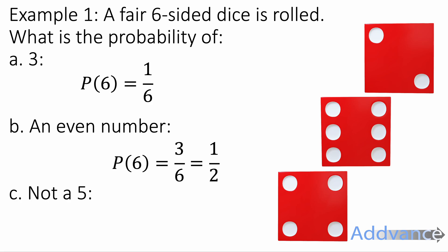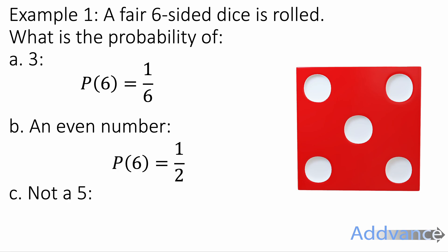Finally, what's the probability of not a 5? Getting a 1, 2, 3, 4 or 6, so anything that's not a 5. Well, the probability of getting a 5 is 1 out of 6. There's 1 chance out of 6. But the probability of not getting a 5 will be 1 minus that.